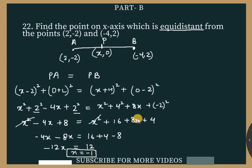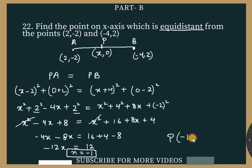The x value is -1. So the point on the x-axis is (x, 0), and since x = -1, the answer is (-1, 0). This is the answer for question number 22.